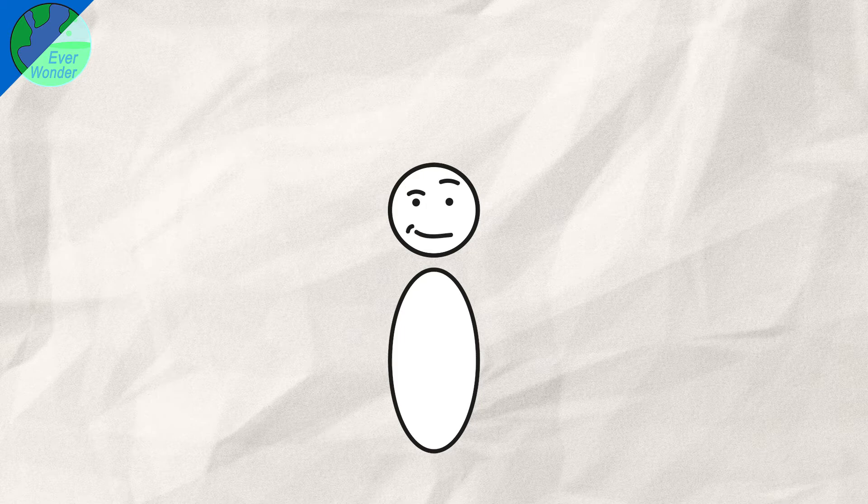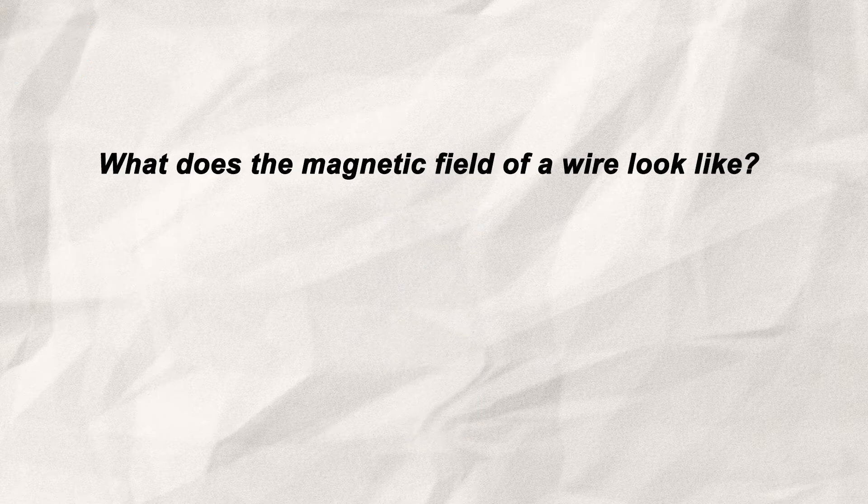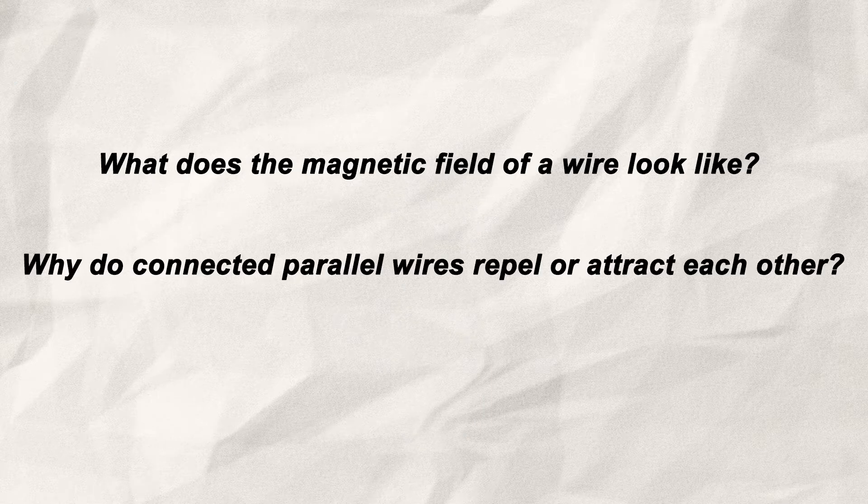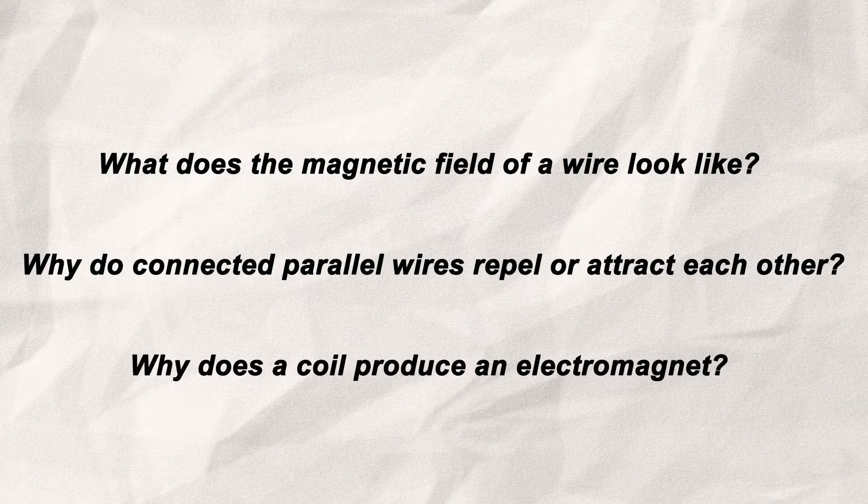In this video, there are several things to discuss. What does the magnetic field of a wire look like? Why do connected parallel wires repel or attract each other? And why does a coil produce an electromagnet?